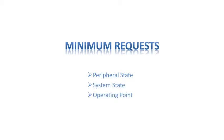Now that we have defined peripheral state, system state, and operating point, we can talk about minimum requests. Minimum requests can be issued for peripheral state, system state, or operating point. Any application that requires a certain minimum state to provide its functionality needs to issue a minimum request to the power management services. For example, an MP3 player application could request a minimum peripheral state to a DSP required to render audio, and also issue a minimum operating point request to keep the CPU above a certain frequency. Minimum requests must be released once the need is no longer there.